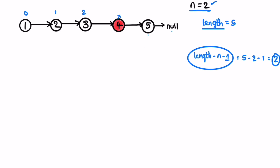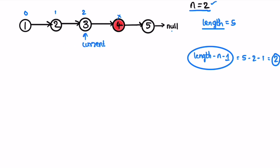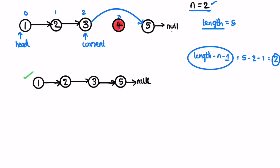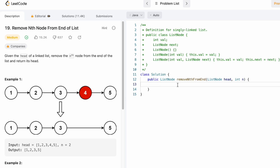We point current back to the head and start iterating from 0 until 2. After each iteration current advances until we're at the predecessor node. Instead of pointing current's next to the next node normally, we set current.next to current.next.next — we're not removing any node objects, just changing the links between nodes. Finally we return the head of the linked list and get the expected output.